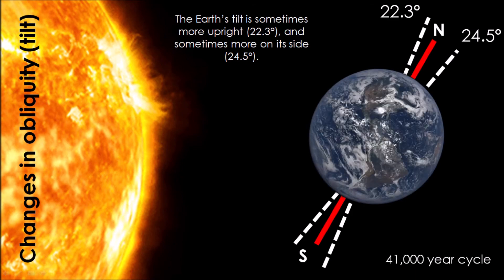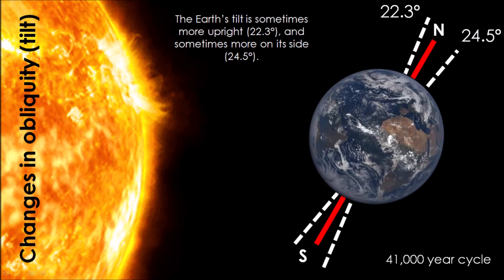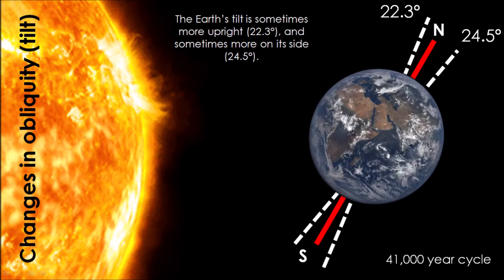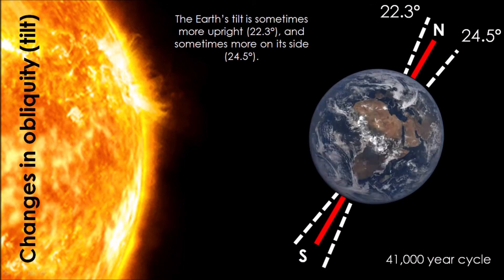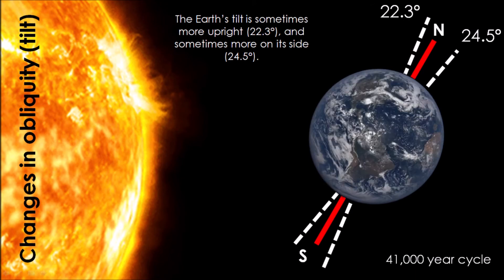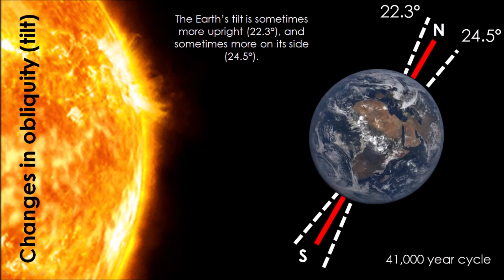The angle of the tilt changes due to the gravitational pull of the Moon. So when the angle of the tilt increases, this can exaggerate the climate. Our summers get warmer, our winters get colder. And the opposite will happen when the angle decreases.